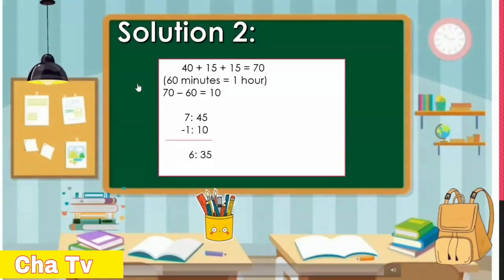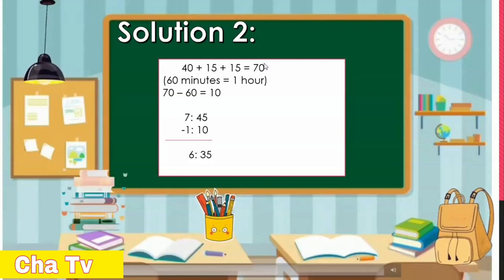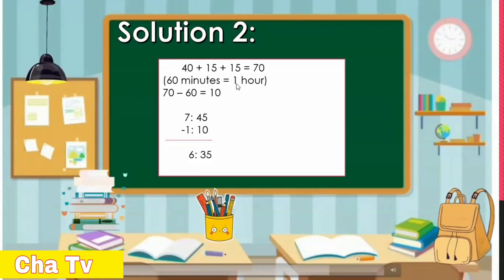Another solution for the problem: We're going to add all the minutes consumed by Rizam. So 40 plus 15 plus 15 equals 70. Let us convert 70 into hours. 60 minutes is equivalent to 1 hour, 70 minus 60 is 10. So 7:45 minus 1 hour and 10 minutes equals 6:35.